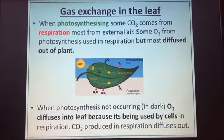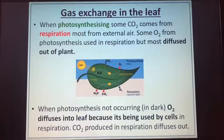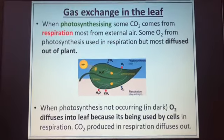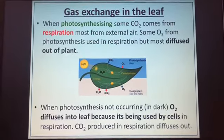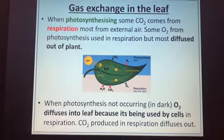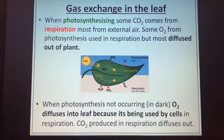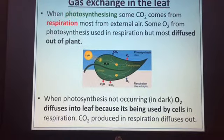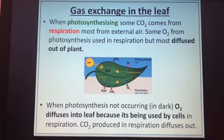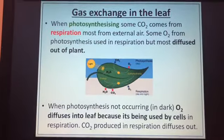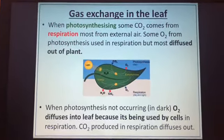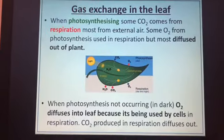When photosynthesizing, some of the carbon dioxide will come from respiration, and some of the oxygen from photosynthesis can be used by the plant for respiration. But most of the time they have to exchange gases with the external air. When the plant isn't photosynthesizing in the dark, oxygen will need to be taken from outside the leaf because there will be no oxygen produced in the dark.